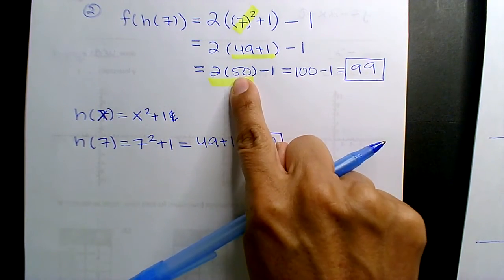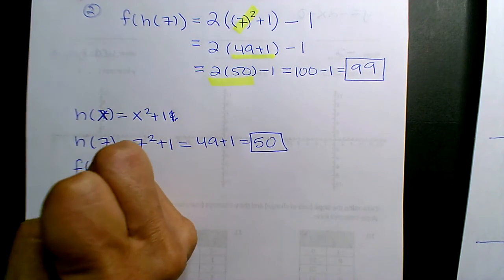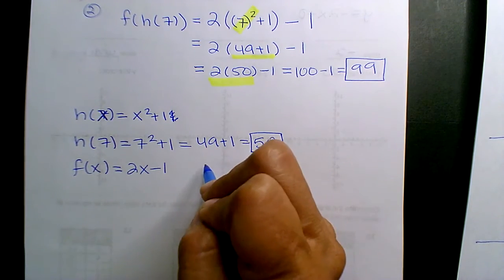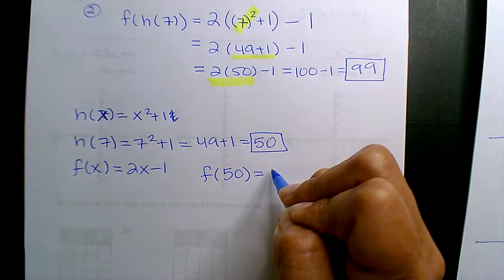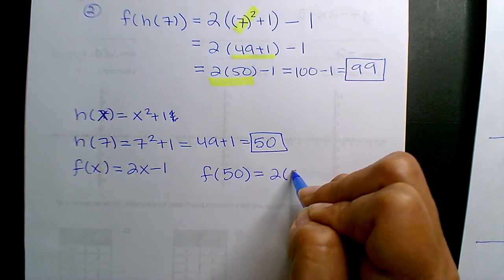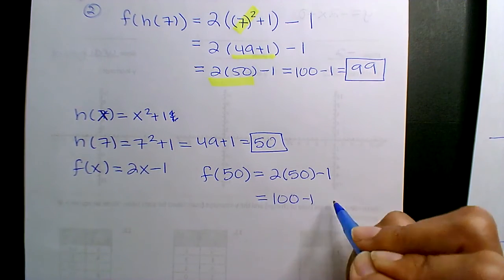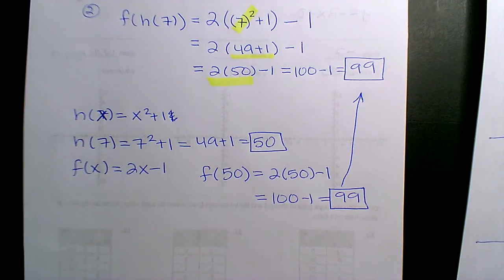And so that's what I plug in here. What's the f function? The f of x function is 2x minus 1. So then f of 50 is 2 times 50 minus 1, 100 minus 1. There's my 99.